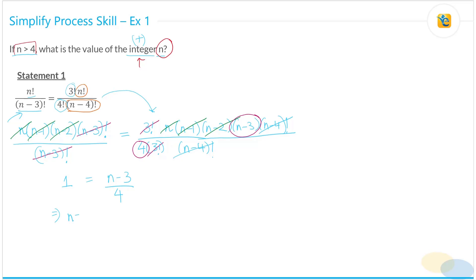n is equal to 4 plus 3, which is n is equal to 7. What does that mean? That means that statement 1 is sufficient.